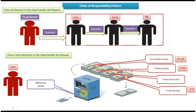The quiz master example is the best example of only one receiver in the chain handling the request. The quiz master asks a question, and if anyone knows the answer, the question won't pass to the next person. If John knows the answer, he answers it and won't pass the question on. Only if he doesn't know will he pass it to the next person. If the next person knows, it stops there.